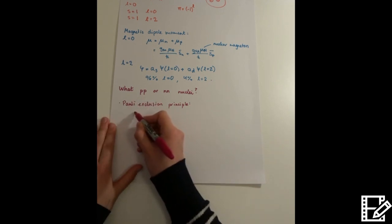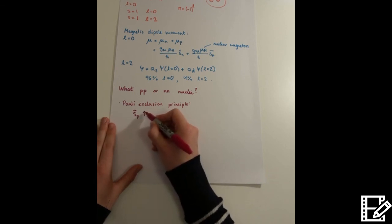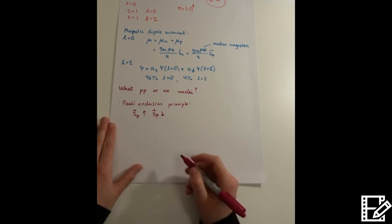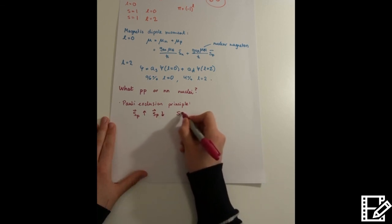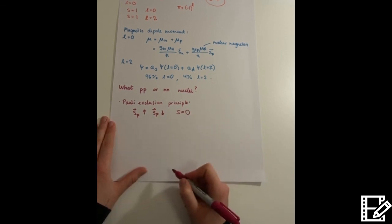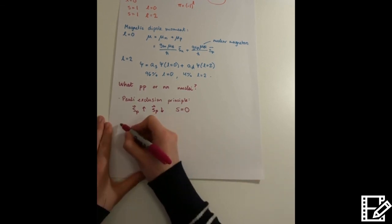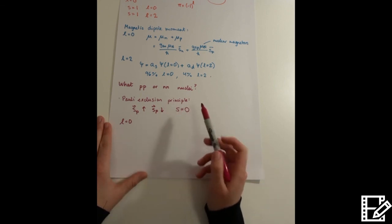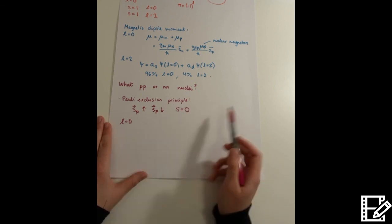So we must have sp, for example, up and sp down in order for this state to exist, which gives total spin 0. This means for the bound state l equals 0 as before, we would have a singlet term. And it just turns out that this is an unbound term, so it's an unbound state.